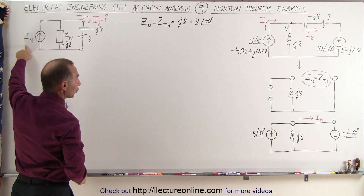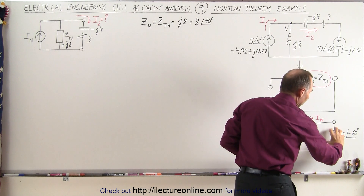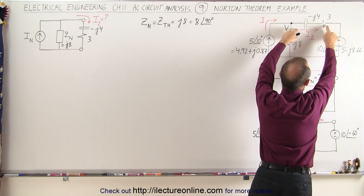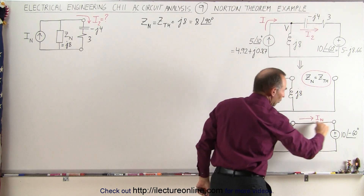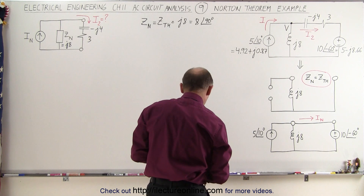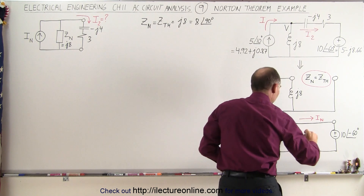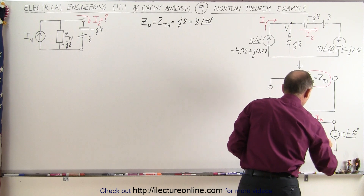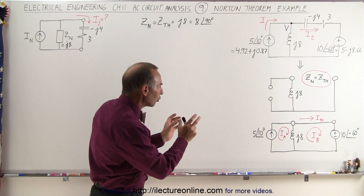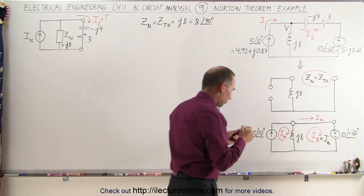The next thing we need to do is find the Norton current. To find the Norton current, we put back our source current, put back our source voltage, and replace the load impedance — the capacitor and the resistor — with a short. We're trying to figure out the current through that short, which will be the Norton current. We'll label this current I sub A and this current I sub B, and use the nodal method to find I sub N, which in this case will be I sub B.